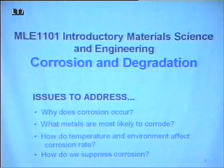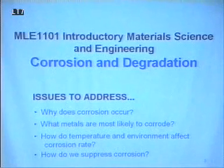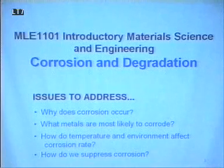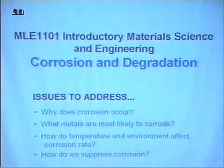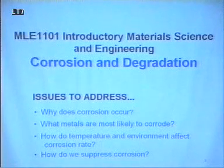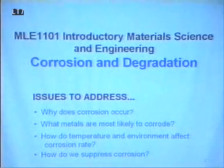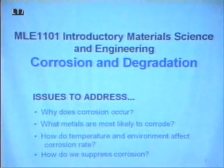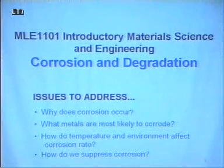The issues we're going to address in this chapter on corrosion and degradation are: why does corrosion occur? What metals are most likely to corrode? What is the effect of temperature and environment on the corrosion rate? And how can we prevent corrosion?